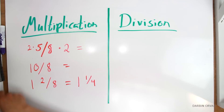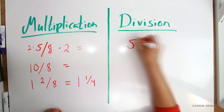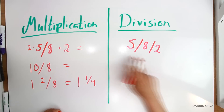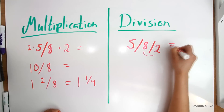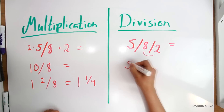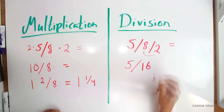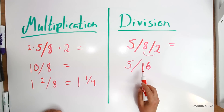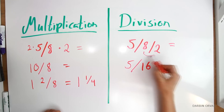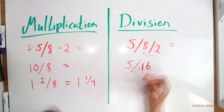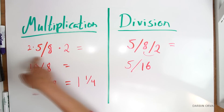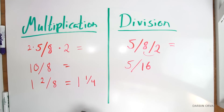Division works along the same lines. However, now we multiply the denominator — the 8 — with the dividing number, the 2, and leave the numerator alone. So that means we have 5 sixteenths, because 8 times 2 is 16, whereas when multiplying, we multiply the 2 with the 5 and leave the bottom number alone.